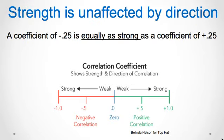The strength of a relationship is not affected by direction. A coefficient of negative 0.25 is equally as strong as a coefficient of positive 0.25. So the sign of the coefficient does not matter in terms of strength.